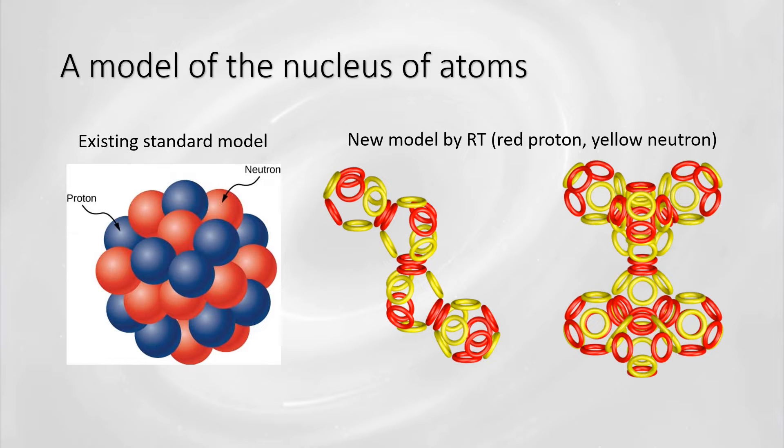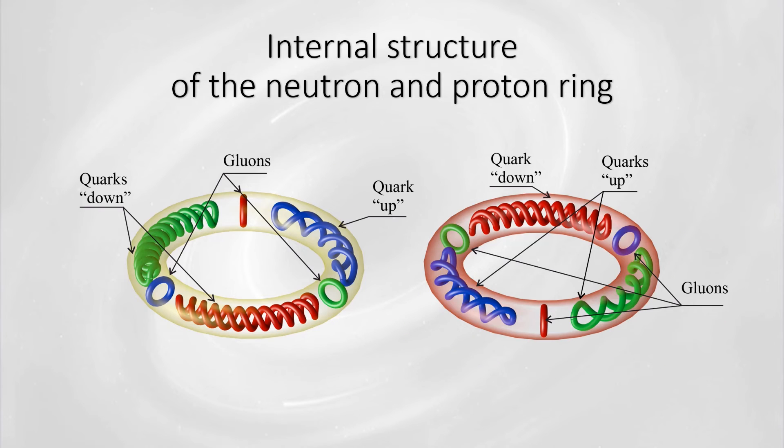This deficiency is addressed by the proposed ring theory model, which allows us to create a model of the structure of atomic nuclei and thus determine the more precise spatial position of electrons on individual energy levels. The ring theory works with the hypothesis that three quark particles always define a plane. Based on this hypothesis, we can create a physical model of a proton and neutron in the shape of a ring.